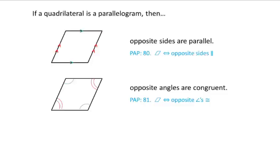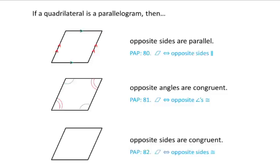Redraw the picture every time because each of these rules have different things, and if you draw it all in one it gets mixed together and it will be really difficult to read later when you need it for your homework. Next, if a quadrilateral is a parallelogram then opposite sides are congruent. We mark congruent with little tick marks, so the top and bottom are congruent and then the left and right are congruent.